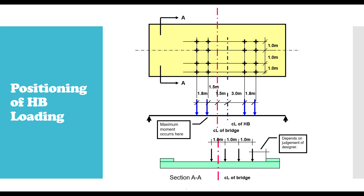HB loading is positioned along the bridge and is considered as a moving load. Most of the time it is easier for us to analyze a moving load as a static load. Ideally, you are supposed to place the HB load on the bridge so that it moves along the bridge, and then you determine the bending moment that gives the highest effect — that is, the location that gives the highest effect.